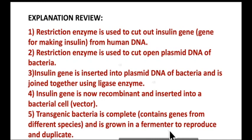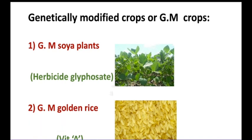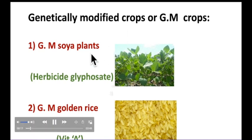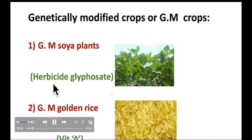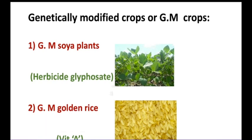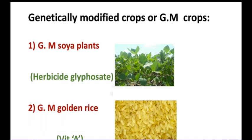Now we are going to discuss the second example: genetically modified crops. Apart from insulin production, plants are also genetically modified to be resistant to herbicides or insect pests. An example is genetically modified soya plants, which are modified so they are not harmed when the herbicide glyphosate is sprayed on them. This means a farmer can spray a field with glyphosate and only the weeds are killed, leaving the soya plants unharmed.